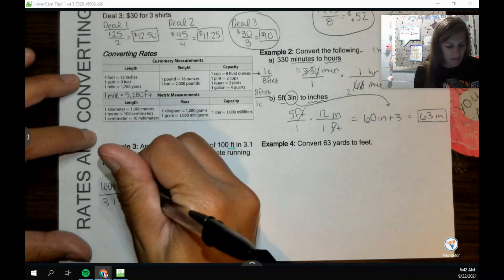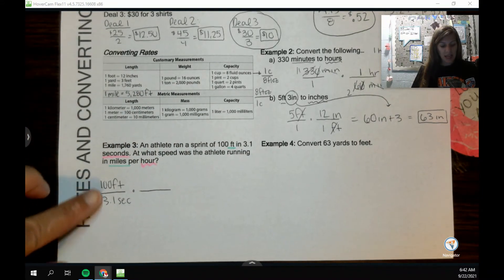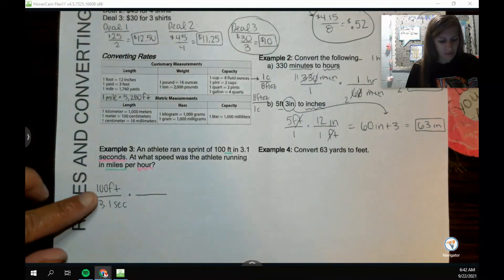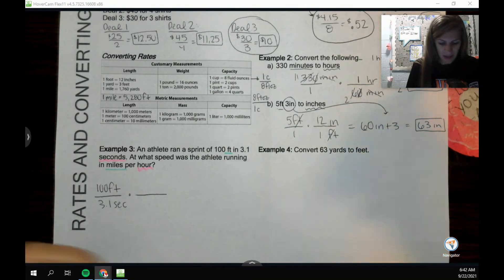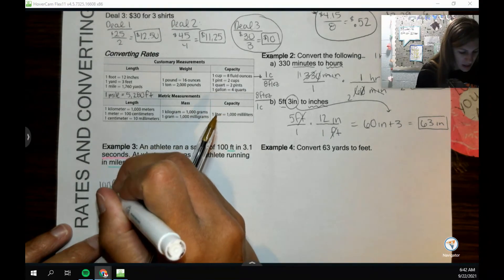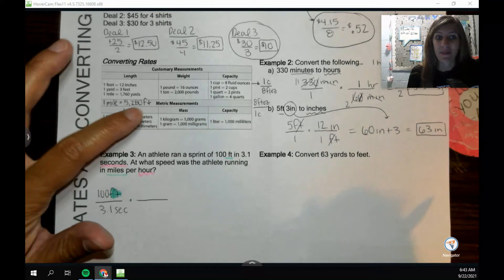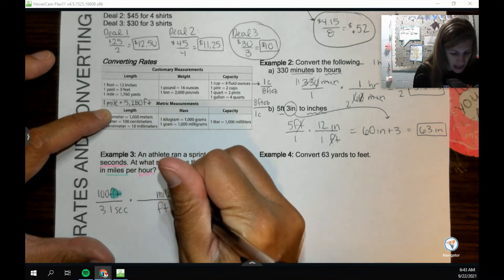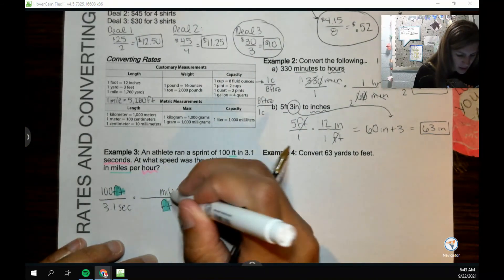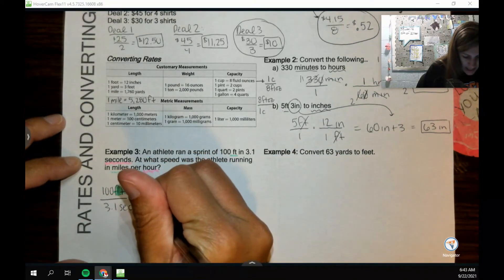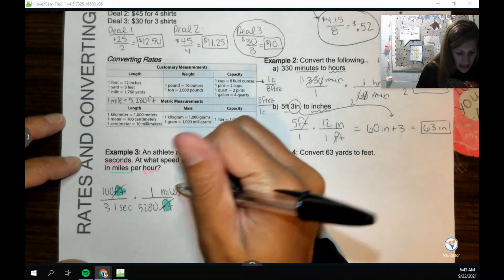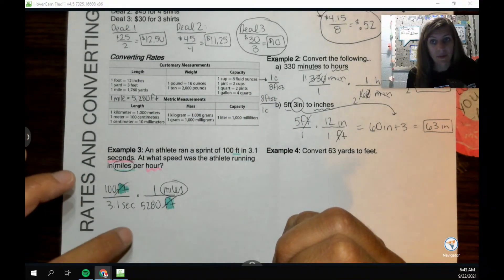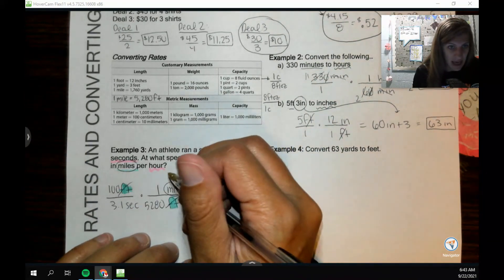I'm going to multiply this by a fraction, probably a lot of fractions. Let's deal with our feet first. If I'm trying to go from feet to miles, I want to look up here to see if I have a conversion that goes from feet to miles. Because I want the feet to divide out, I'm going to put feet on bottom and miles on top. The number that goes with feet is 5,280. The number that goes with miles is 1. My feet will divide out and I'll be left with miles, which is what I want to be left with.